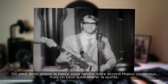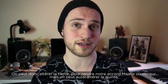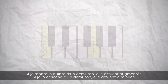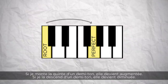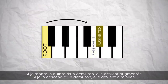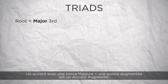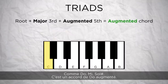I can alter my third to make my chord major or minor, but I can also alter the fifth. If I move my perfect fifth up a semitone, it becomes augmented. And if I move it down a semitone, it becomes diminished. A chord with a major third and an augmented fifth is called an augmented chord, such as C, E, G sharp.